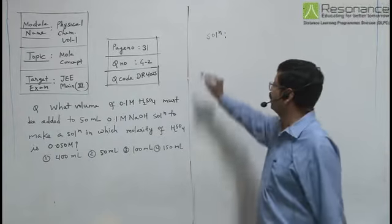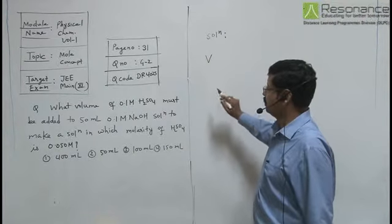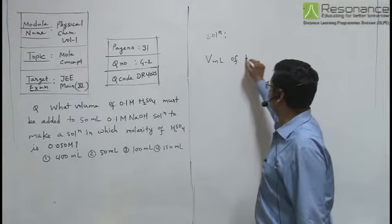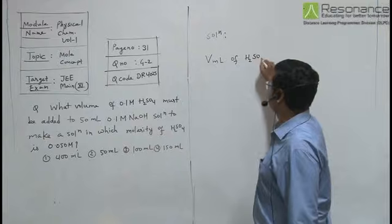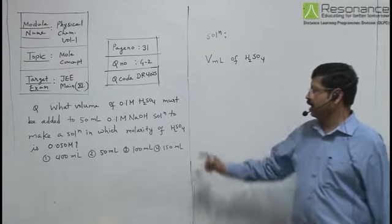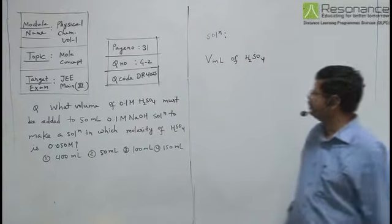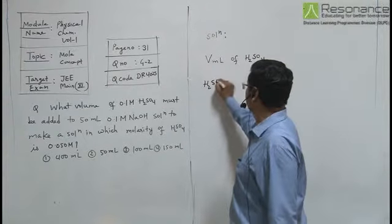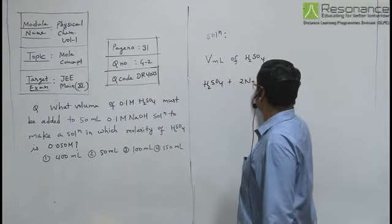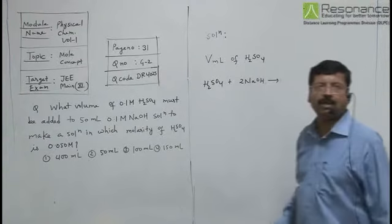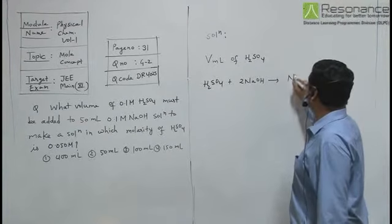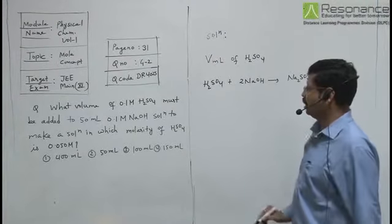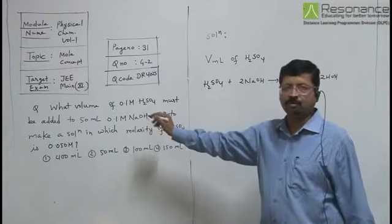Suppose we have added VML of H₂SO₄ — this is the final majority of it. H₂SO₄ reacts to give Na₂SO₄ plus 2HOH. We need to know the millimoles.